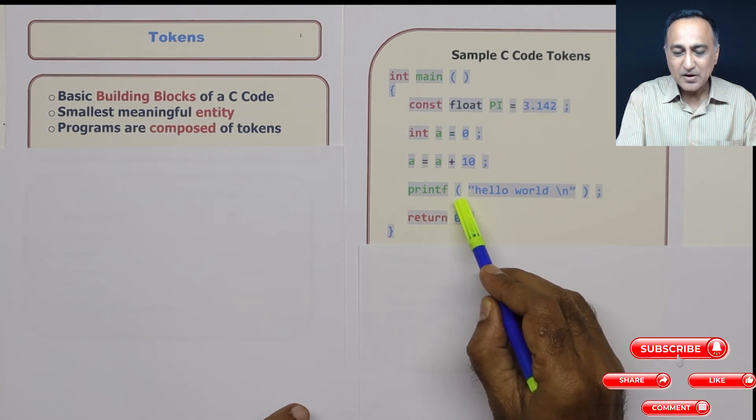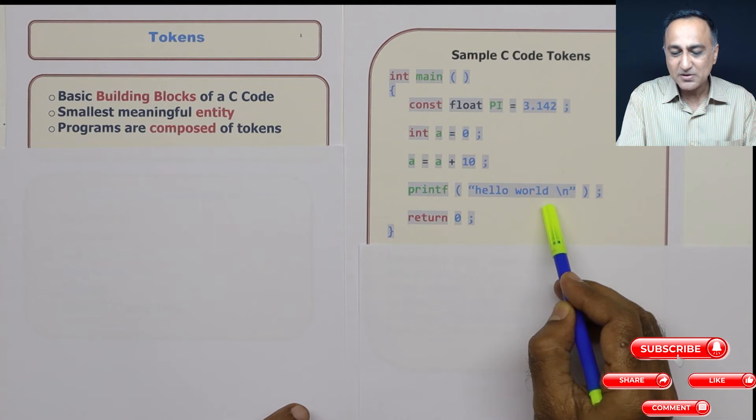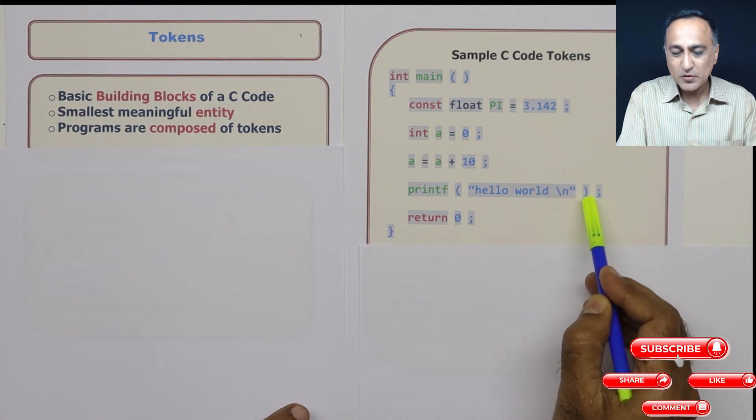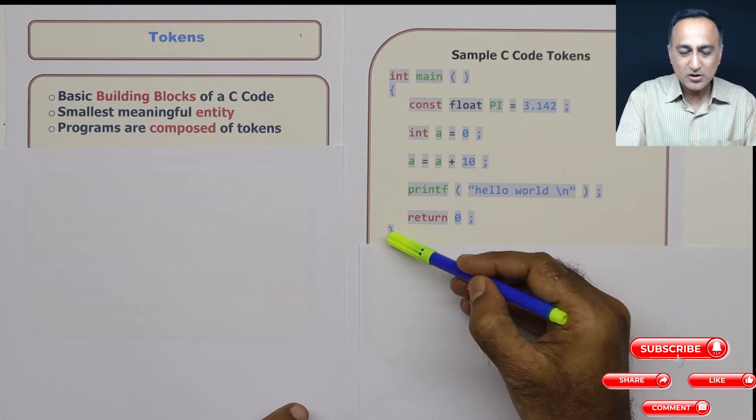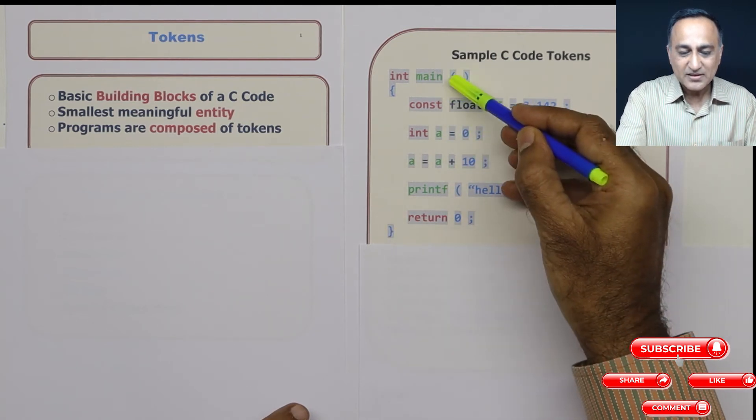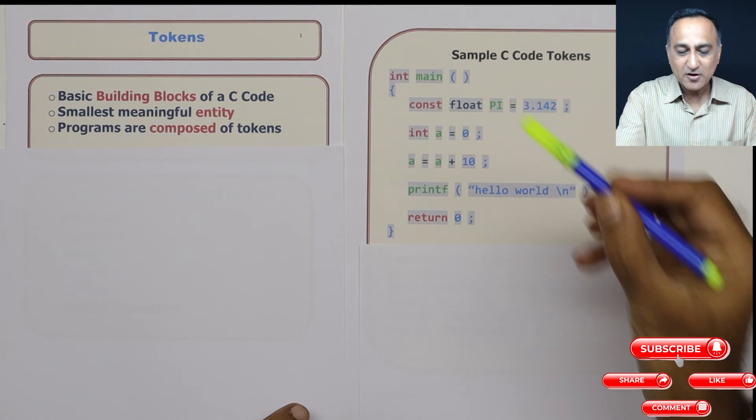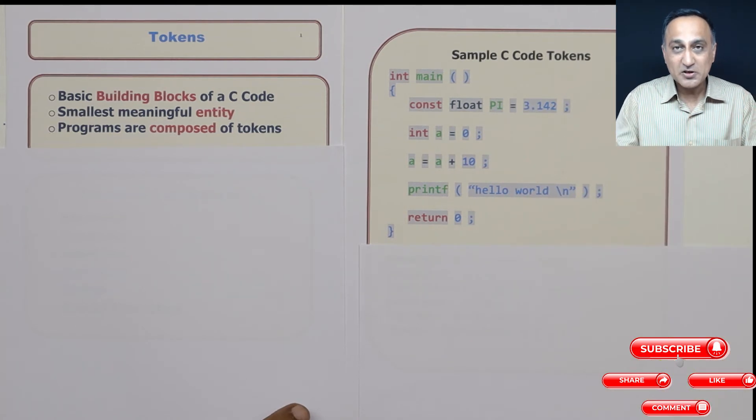This indicates the call to the printf function. That means after this parenthesis there is going to be something, and the parenthesis is going to end, and this entire thing is going to be sent to printf. The flower bracket, round bracket are all examples of special characters.